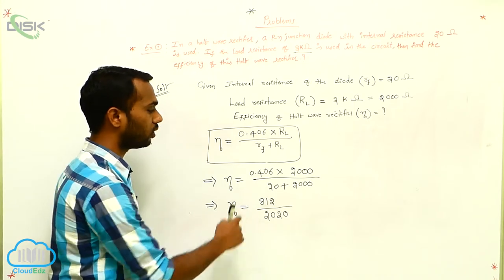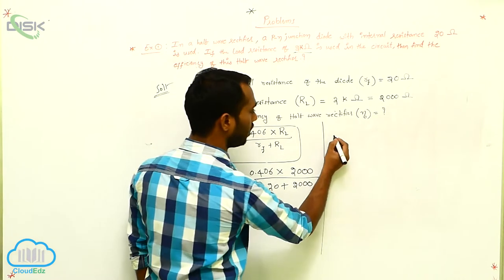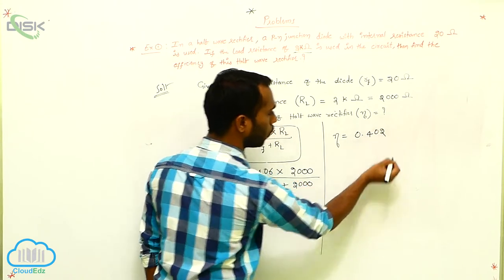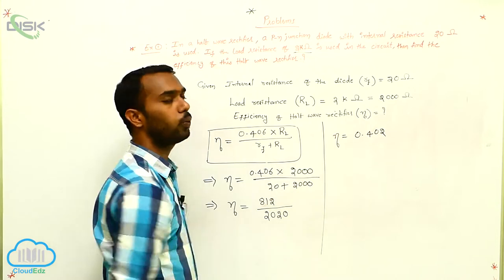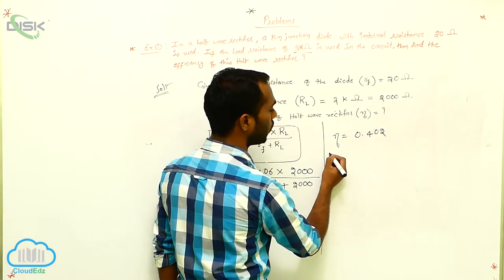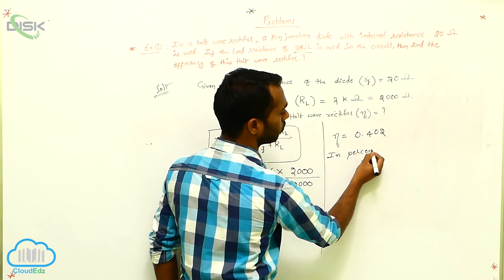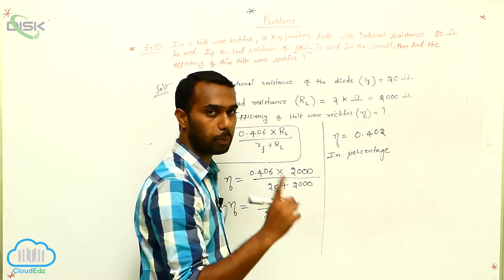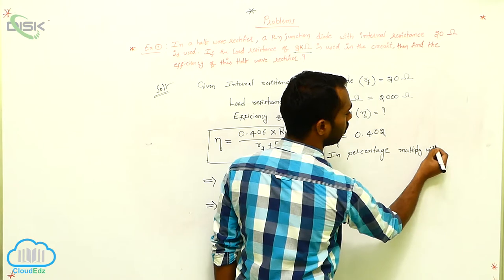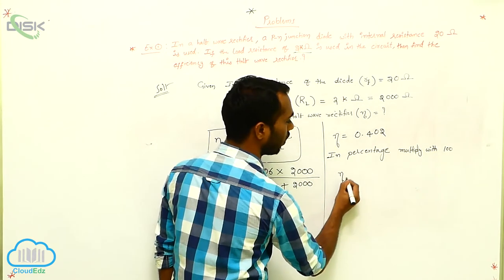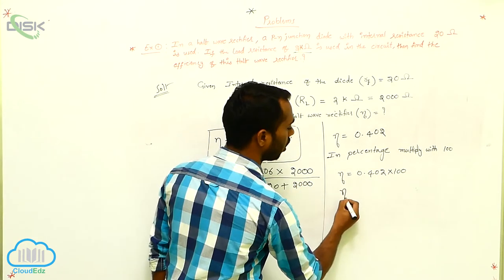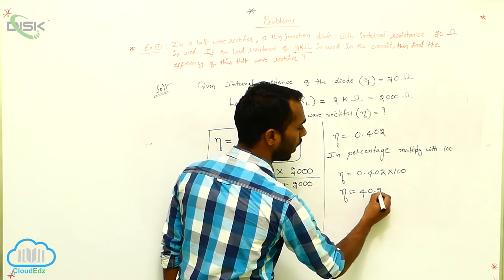Simplifying by dividing 812 by 2020, we get eta equals 0.402. To express this as a percentage, multiply by 100: eta equals 40.2 percentage.